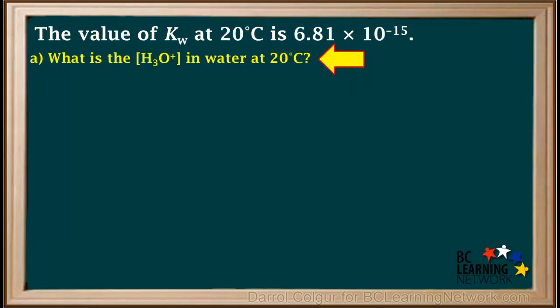Question A asks us to find the hydronium ion concentration in water at 20 degrees. The Kw, which is hydronium concentration times hydroxide concentration, is 6.81 times 10 to the negative 15th.